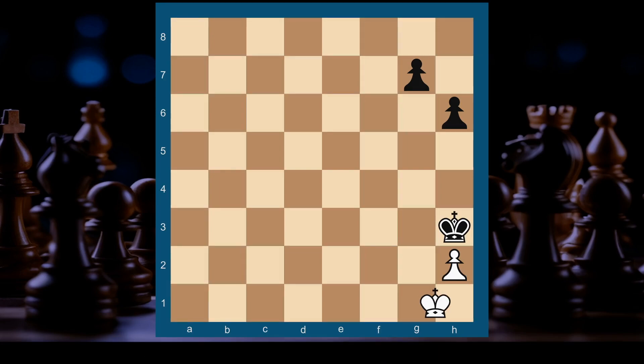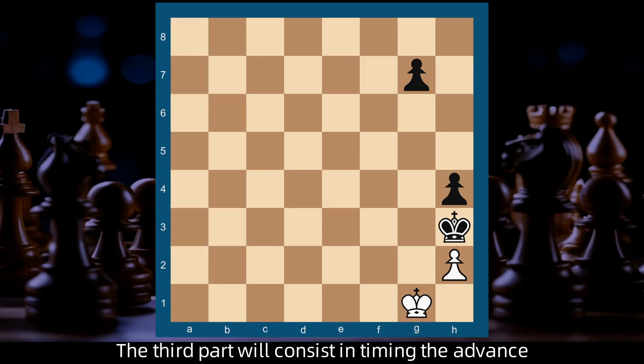Up to the king. King h1, h5, King g1, h4. This ends the second part.